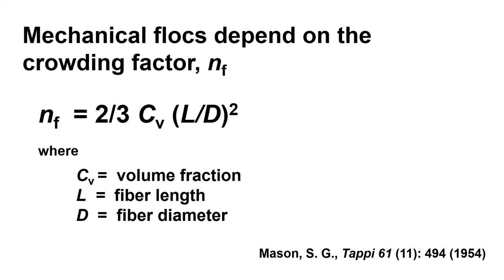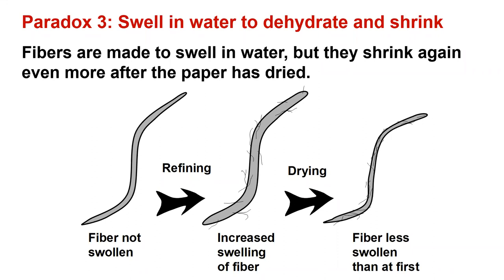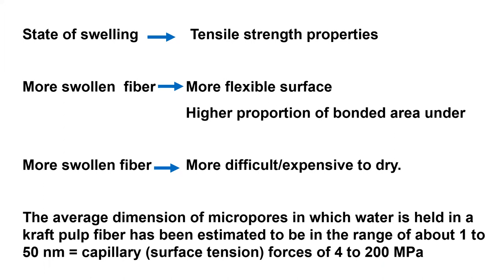The third paradox is: swell fibers with water and then dehydrate again. We have fibers that are not swollen, but during refining — with external and internal defibrillation — fibers become swollen in water, especially because of internal fibrillation. Then the water inside is removed by drying. So again, paper makers tend to make fibers swollen and then make them shrink. The more swollen the fibers at the beginning, once you remove the water, you favor higher paper strength. Having more swollen fibers also makes them more flexible — they flatten up and increase the relative bonded area.